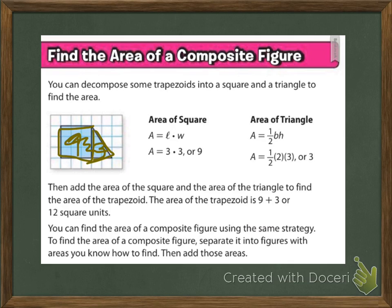The shapes aren't always going to be as easy as a trapezoid — there will be some crazy-looking shapes. To find the area of a composite figure, you separate it into figures with areas you know how to find, then add those areas. We haven't covered the area of a circle yet, so if things are rounded out, we're going to take that rounded edge and make it a straight square or rectangle edge.